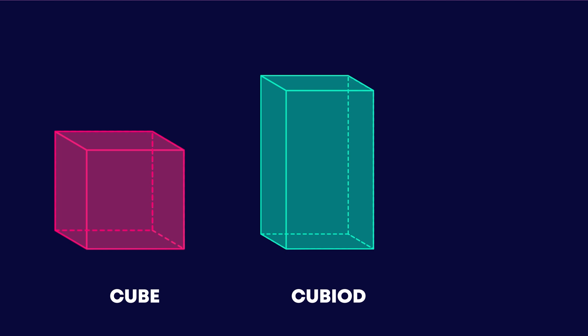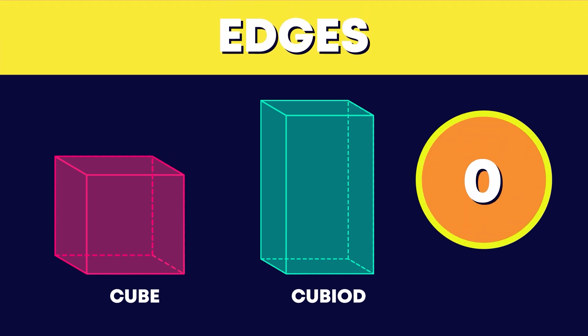Now let's count the edges. Cubes and cuboids have 1, 2, 3, 4, 5, 6, 7, 8, 9, 10, 11, 12 edges.